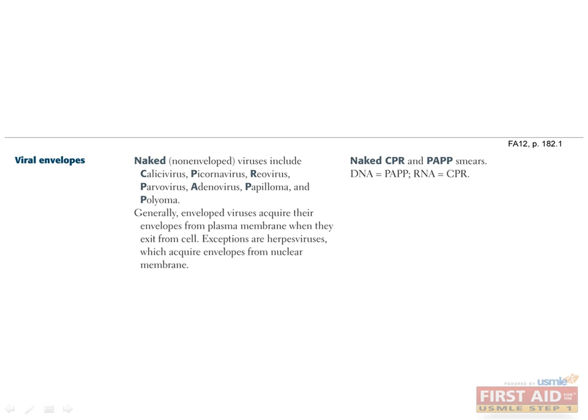Enveloped viruses are highly susceptible to damage by conditions such as detergents, extreme pH, temperature, and organic solvents. Naked viruses, on the other hand, are usually more stable because they can withstand these agents. There are seven naked viruses: three are RNA viruses — calicivirus, picornavirus, and reovirus — and four are DNA viruses — parvovirus, adenovirus, papillomavirus, and polyomavirus.